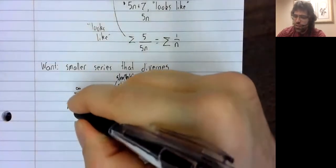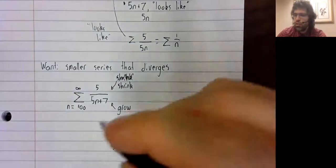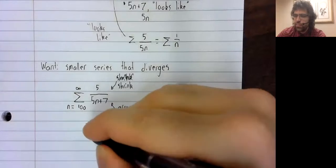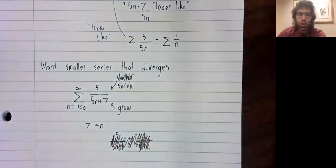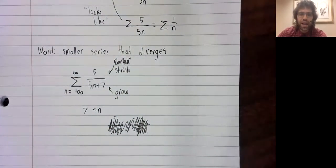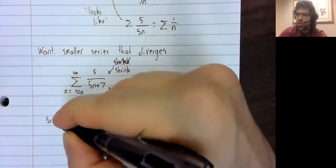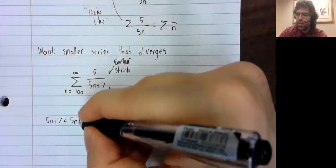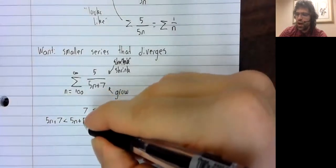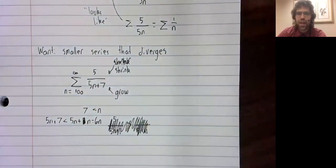If I started at some large number, say I started at 100, then the 7 would always be less than n. And 5n plus 7 will be less than 5n plus n.